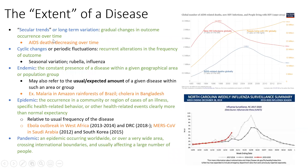One thing epidemiologists deal with a lot is trying to define the extent of a disease — basically how you can see which diseases are bigger priorities than others. One thing you might look at is a long-term or secular trend, which is gradual changes in occurrence over time. For example, AIDS deaths are decreasing over time. You also have cyclic changes, which are recurrent alterations in frequency of outcome — common in influenza, where we see a spike every winter.